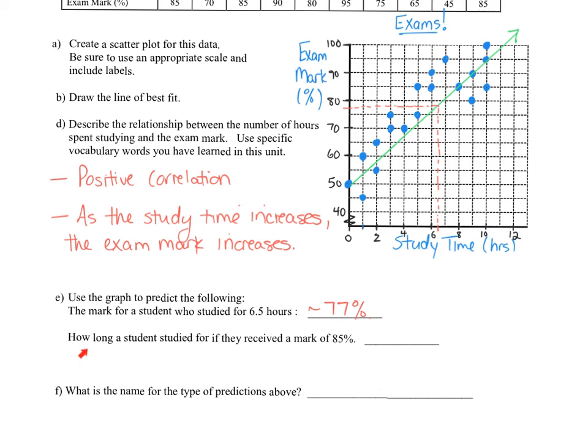Let's do the other one. It says how long a student studied if they received a mark of 85%. I'll do this one in yellow. So we're going to start at 85%. We've got to find 85%, and we're going to head over to our line of best fit. Looks like we're pretty close there to that point. Again, we're heading to the line, not to the data. And then we're going to just read off our graph. It looks like we're around eight hours. If you said a little bit more than eight hours, that would be great as well. We'll say approximately eight hours of study time.